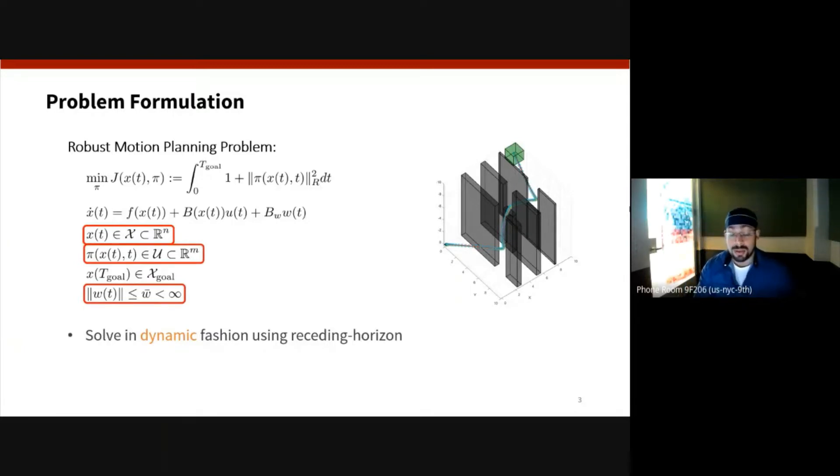What makes this problem difficult to solve is the fact that we have to compute these solutions in real time in dynamic fashion using receding horizons while respecting various operational constraints. This includes things such as obstacle avoidance, control limit constraints, and on top of everything else we have to account for the fact that this term W(t) is an unmodeled time-varying disturbance which in our framework we will always assume to be bounded.